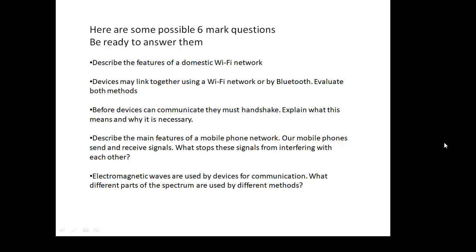The kinds of questions you're going to get are very likely to be six-mark questions — be ready to answer them. Here are some examples: 'Describe the features of a domestic Wi-Fi network.' 'Devices may link together using Wi-Fi or Bluetooth — evaluate both methods.' Evaluate means say what the advantages and disadvantages are and make a judgment at the end. 'Before devices can communicate with each other, they must handshake — explain what this means and why it is necessary.' To get six marks, you've got to give six good, intelligent, relevant bits of information.